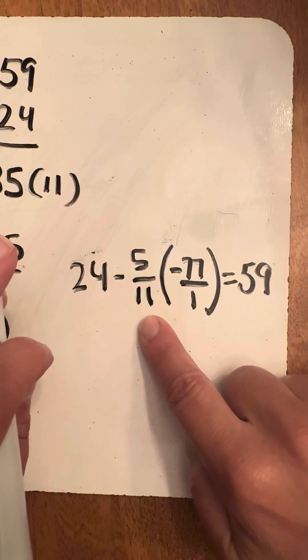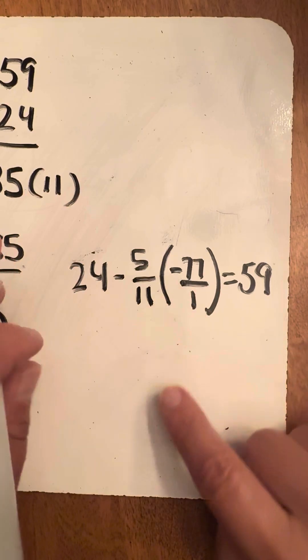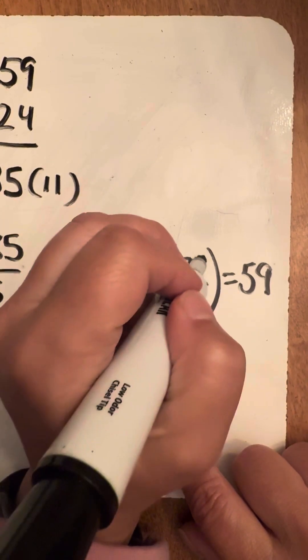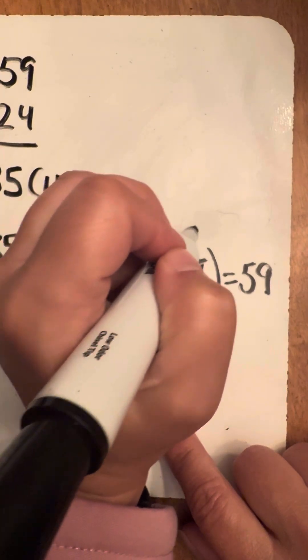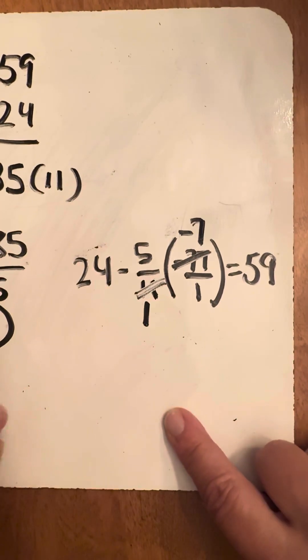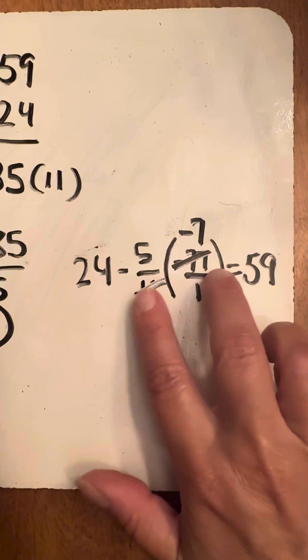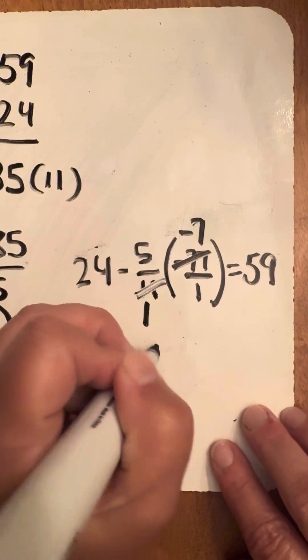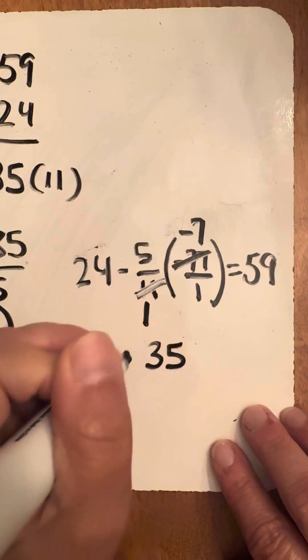So it goes into itself once, it goes into negative 77 negative seven times. And then now I can multiply these two numbers. The negative 5 times the negative 7 is 35. That's a positive.